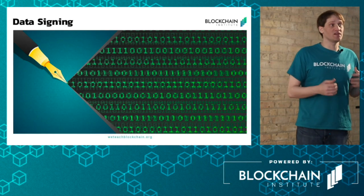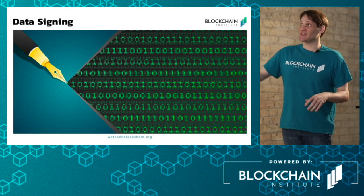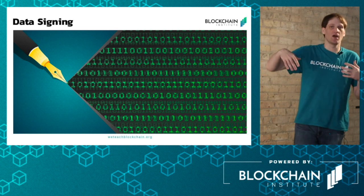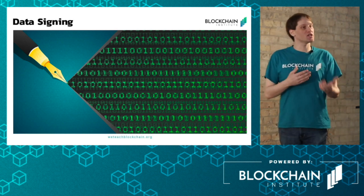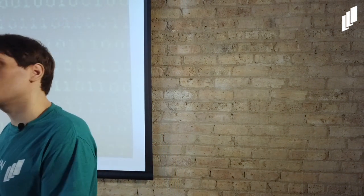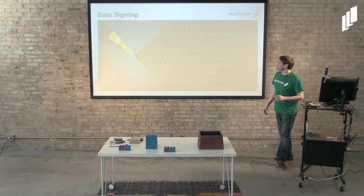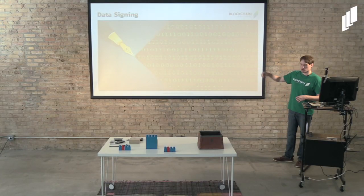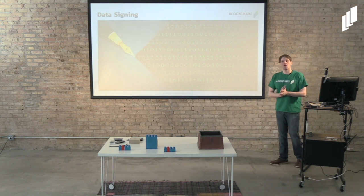The first step in initiating a transaction is data signing. This is a process that initiates a transaction. In order to initiate that transaction, you need to use your private cryptocurrency data to prove that yes, this is my money, I can prove it, and I'm going to transact and send it wherever. Once this data signing process occurs, the transaction is initiated.